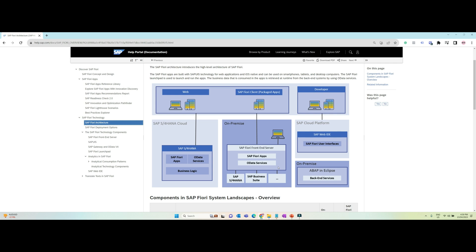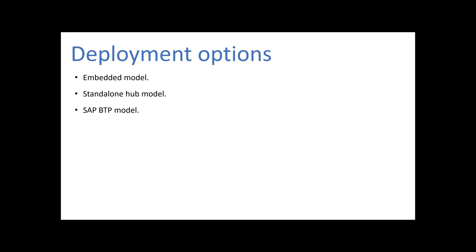OData is a standardized protocol for establishing and consuming data APIs. OData is built upon fundamental protocols like HTTP and REST. OData is used by the SAP Fiori apps to display data from the backend and to update the data there. From a technical perspective, SAP Fiori can be deployed in three different ways: embedded model, standalone hub model, and SAP BTP model.